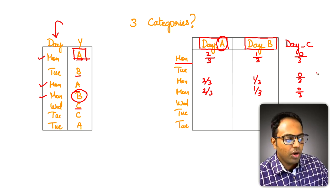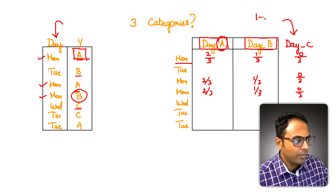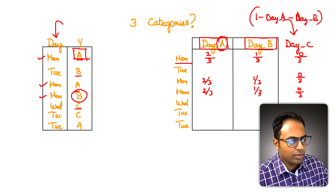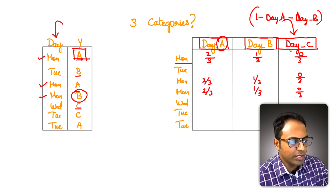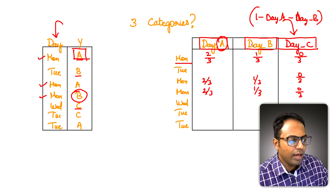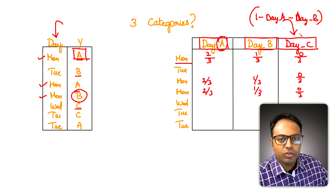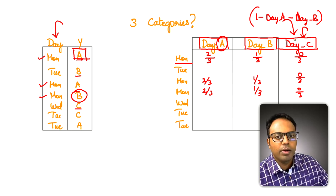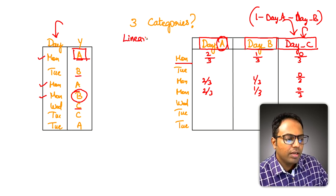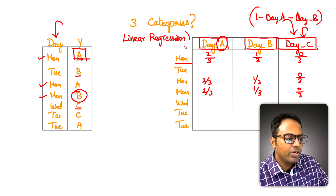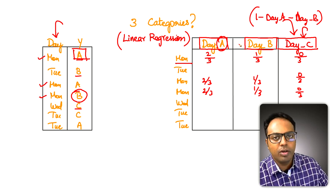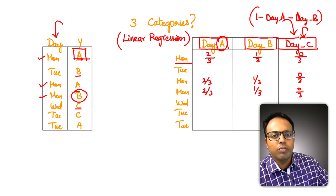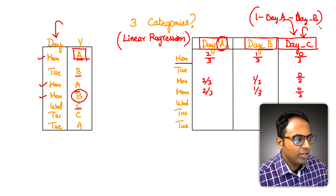The c column is not needed because you can construct it as: day_c = 1 − day_a − day_b. The information contributed by day_c can be written as a formula of day_a and day_b, making it redundant. If you use an algorithm like linear regression, which requires features to be independent of each other, including c would be problematic since it can be expressed as a combination of a and b — it brings no new information.